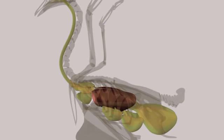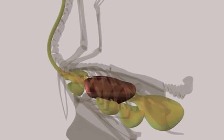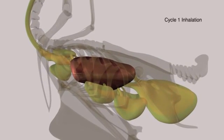The path of a breath through the system can be summarized in four steps. During the first inhalation, the breath travels down the trachea, into the left or right bronchus, through the lung, and into the posterior thoracic and abdominal air sacs.